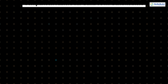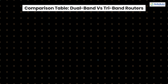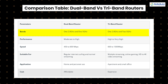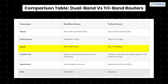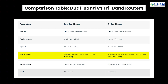That was a brief introduction about dual-band and tri-band routers along with their pros and cons. Now let's look at a comparison of features. In terms of bands, tri-band routers use one 2.4 GHz and two 5 GHz signals. In terms of performance, we get high performance in tri-band, but moderate to high in dual-band. In terms of speed, we get up to 1300 Mbps in tri-band routers, and up to 450 to 600 Mbps in dual-band routers. Tri-band is suitable where high speed and large data consumption are required.